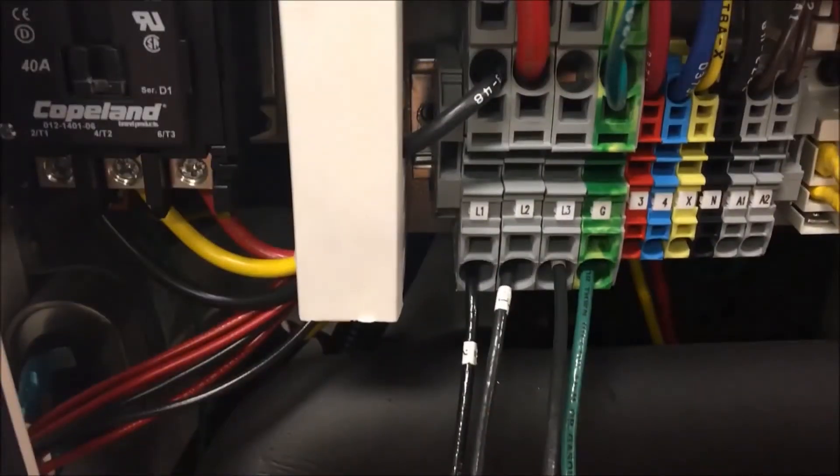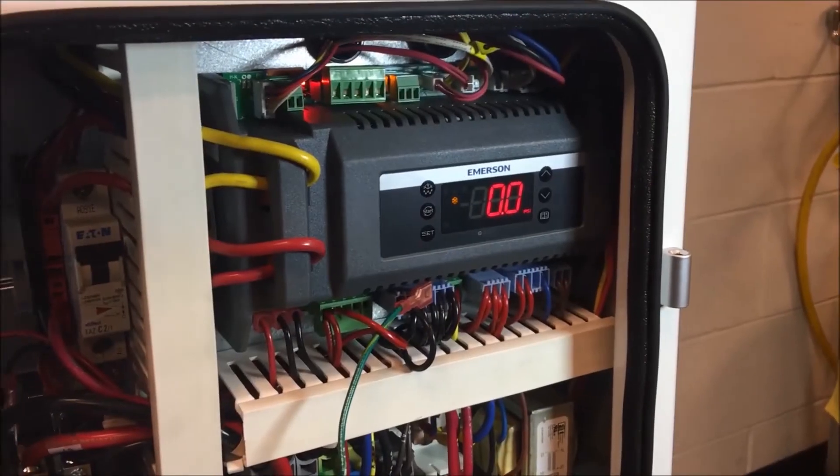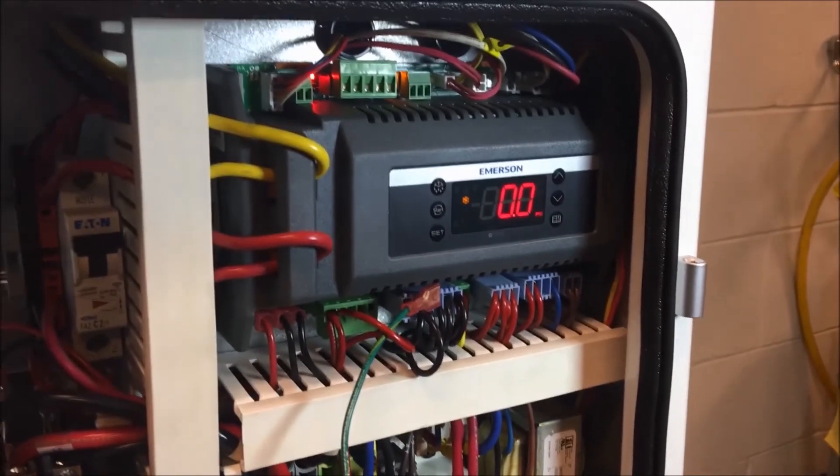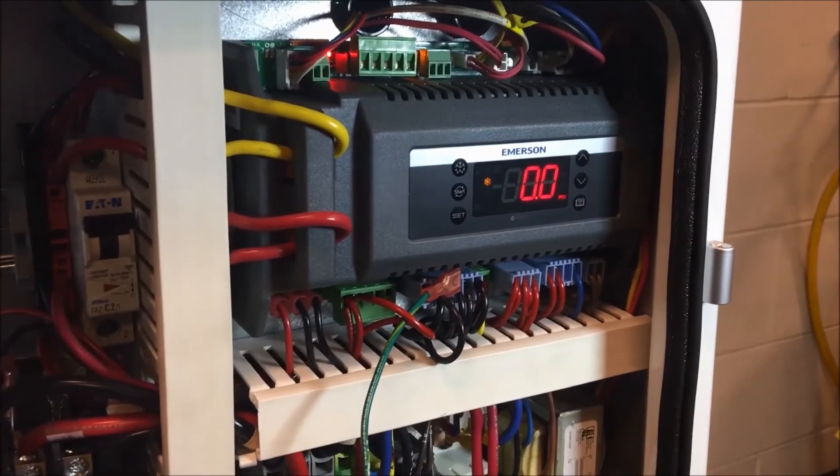To do that, we need to cut off the power to the unit and then we can change the wires. Once the wires have been switched around, go ahead and reapply power to the unit. So now that the error has been corrected, now the unit can be programmed.